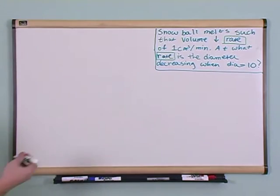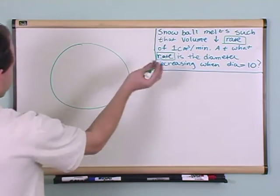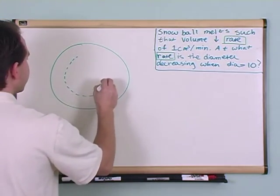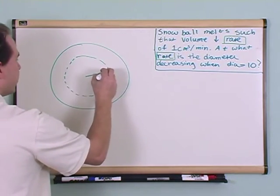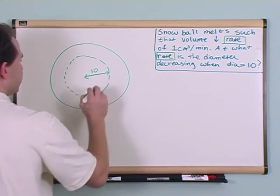So you're going to have some sphere which is a snowball and it's got some distance. At some point it's going to shrink, it's going to get smaller because it's melting. At some point the diameter is going to equal ten, ten centimeters.